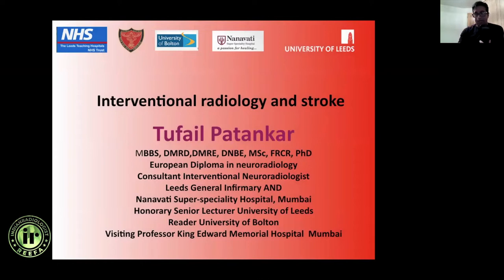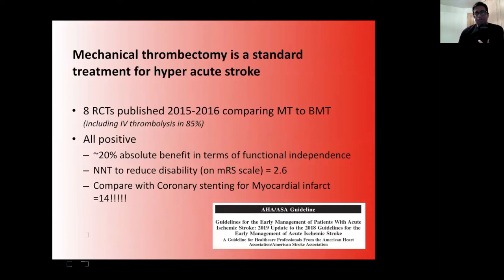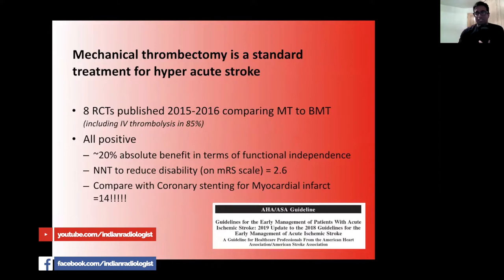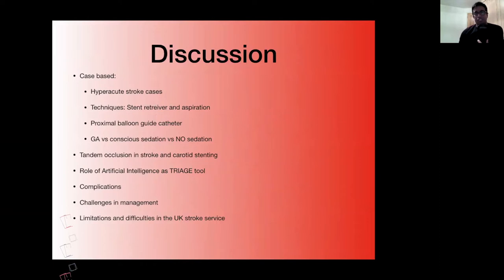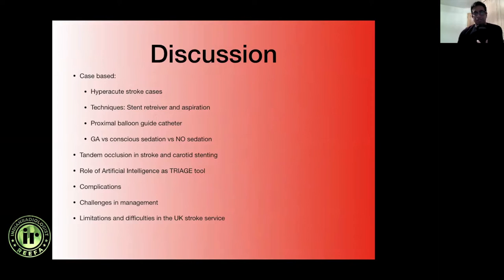I'm not going to debate - and I don't think there is any debate anymore - about the benefits of thrombectomy. We know that NNT is 2.6, compared to coronary stenting trials which was 14. In the next 25 minutes we'll talk about case-based discussion, benefits in tandem occlusions, different techniques, conscious sedation versus GA, some complications, and AI techniques we use as a triage tool.